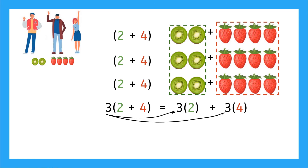So we can go ahead and calculate it. We have 6 kiwis plus 12 strawberries — that's just doing our multiplication. And if we add those together, we get 18 pieces of fruit in total.